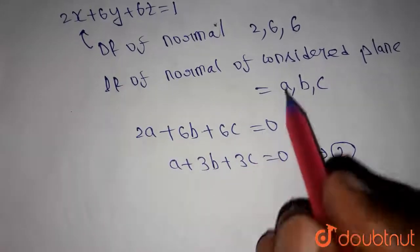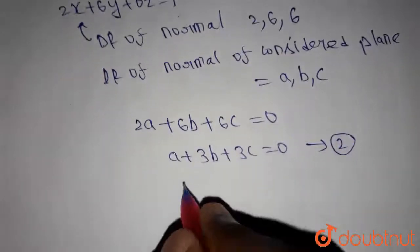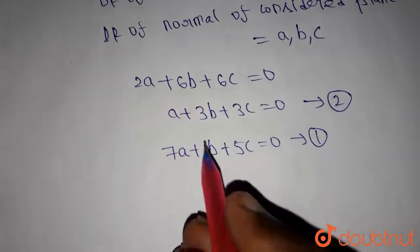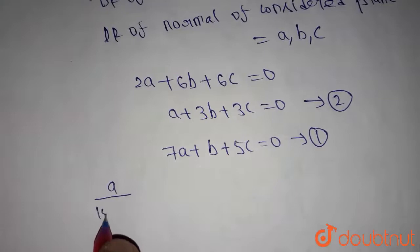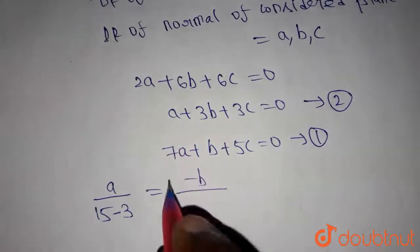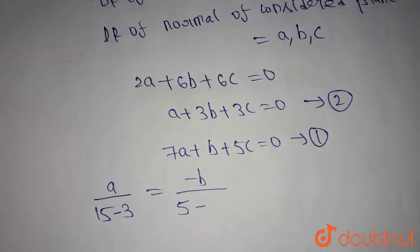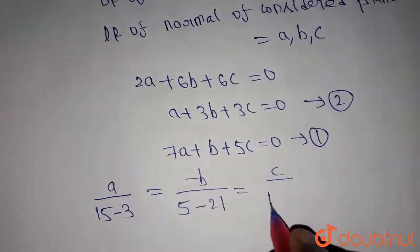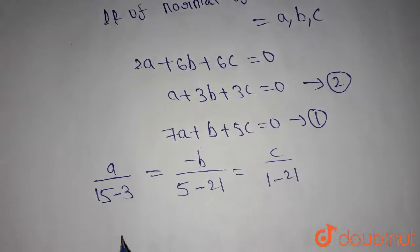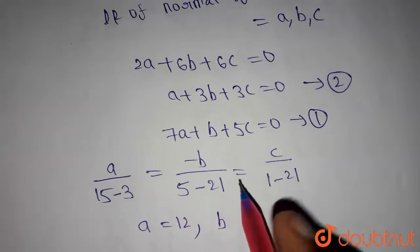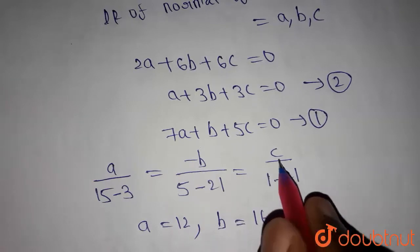Now we have two equations with three unknowns. Equation 1: 7a + b + 5c = 0. Using cross-multiplication to find a, b, c: a/(3·5 − 1·3) = −b/(1·5 − 7·3) = c/(1·1 − 7·3). This gives a = 15 − 3 = 12, and for b: 5 − 21 = −16, so with the negative sign b = 16, and c = −20.